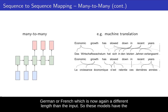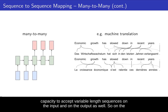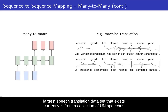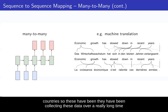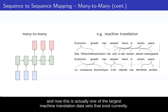These models have the capacity to accept variable length sequences on both input and output. The largest speech translation dataset that exists currently is from a collection of UN speeches, because UN speeches are often translated into multiple different languages for many countries. They have been collecting this data over a really long time, and now this is one of the largest machine translation datasets that currently exists.